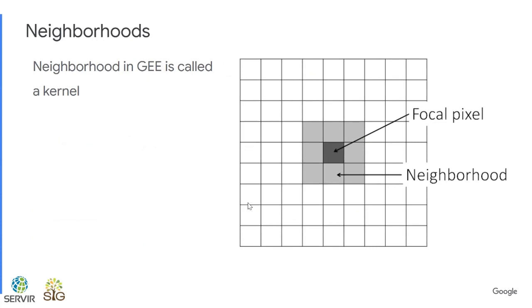So first, what is a neighborhood? Essentially, it is the surrounding pixels to your focal pixel. One way to think about it: pixel-based image transformations are a special case of neighborhood-based transformations where the neighborhood is zero — only the focal pixel itself is used in the transformation.